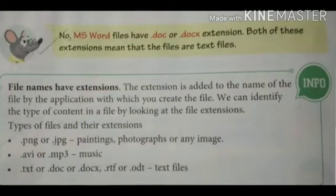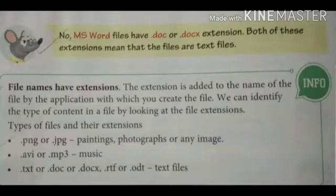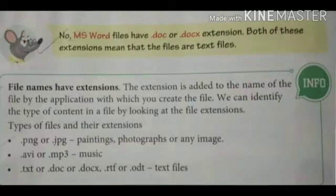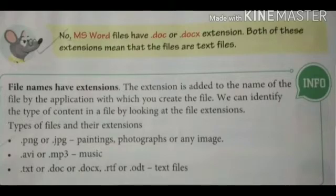Now let's get to know about file extensions. File names have extensions. Whenever we save any file with any name, it is always followed by an extension, which shows what kind of file it is. Suppose a file contains images, so its file extension will be either .png or .jpg. If it is a music file, its extension will be either .avi or .mp3. In the case of text files, it could be .txt, .doc, or .docx. You might have noticed something common in file extensions — they always begin with a dot.